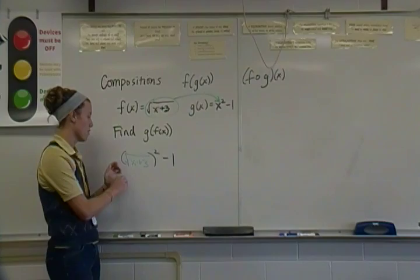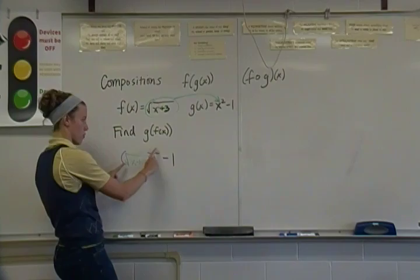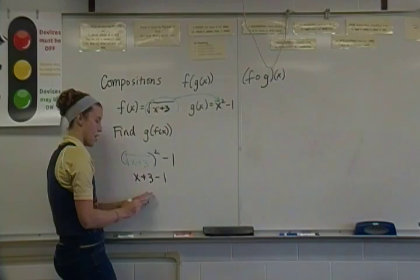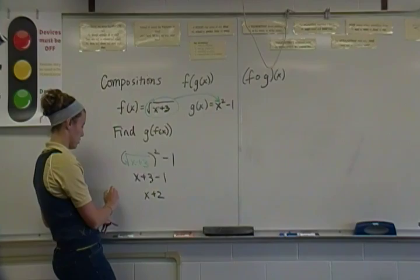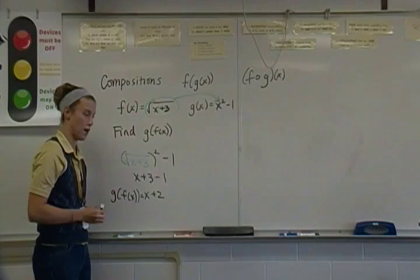But in this particular case, we have the square root quantity squared. So the square root and the square will actually cancel, leaving us just with x plus 3 minus 1. And when I simplify that, I get x plus 2. And so that is what g of f of x is. We're done with that piece right there.